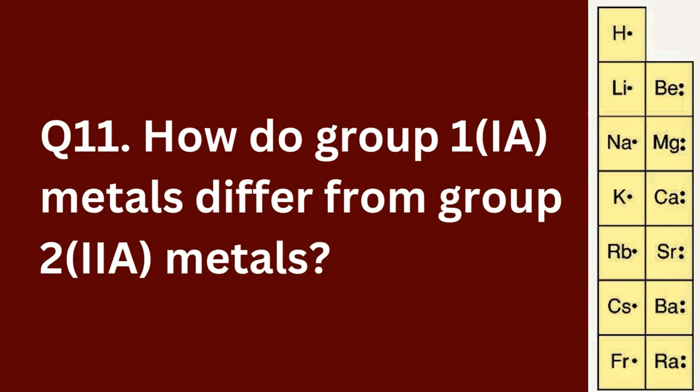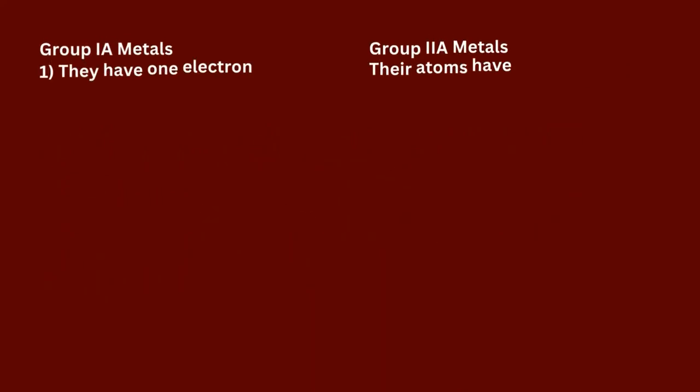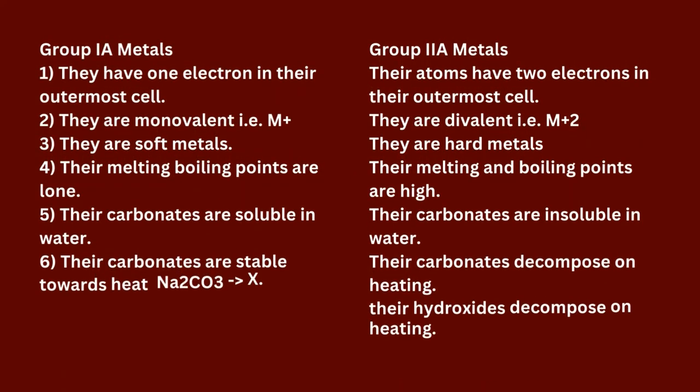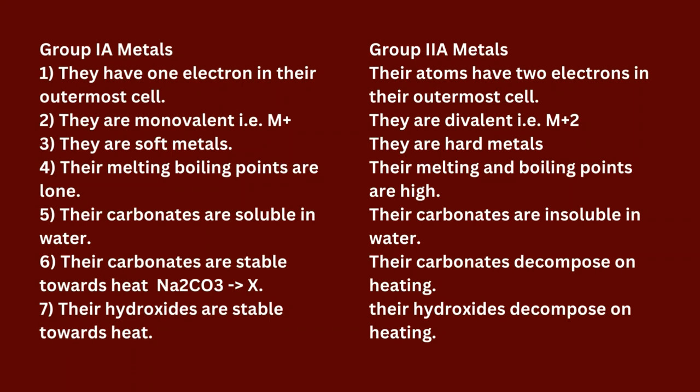Question 11: How do group 1A metals differ from group 2A metals? Group 1A metals: (1) They have 1 electron in their outermost shell. (2) They are monovalent (M+). (3) They are soft metals. (4) Their melting and boiling points are low. (5) Their carbonates are soluble in water. (6) Their carbonates are stable towards heat — Na2CO3 shows no reaction on heating. (7) Their hydroxides are stable towards heat.